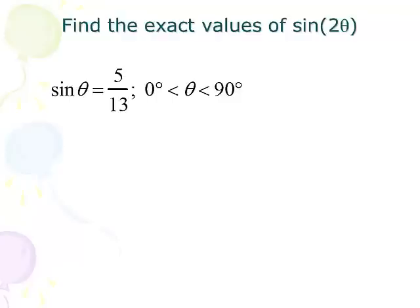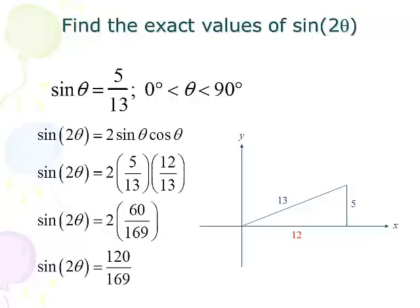Let's do some problems working with sine and tangent of 2u. The sine of theta is 5/13, and theta is between 0 and 90 degrees — so that's quadrant 1. Sine is opposite over hypotenuse, and the Pythagorean theorem gives the adjacent side as 12. So the sine of 2 theta is 2 sine cosine: 2 times 5/13 times 12/13. That gives 60 over 169, times 2 equals 120 over 169. The nice thing about these problems is there's only one triangle and one quadrant.